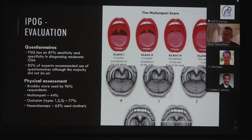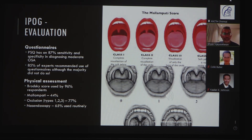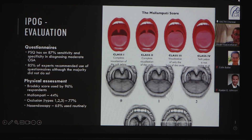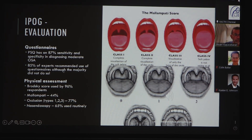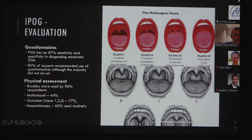We've talked about poor access to sleep studies and using sleep questionnaires pre- and post-operatively. The International Pediatric Otolaryngology Group found 87 percent sensitivity for diagnosing OSA with the PSQ, and 85 percent of experts recommended doing preoperative PSQs, although the majority did not do so. For physical assessment, the Brodsky score is most commonly used — 96 percent of pediatric ENT surgeons use it. The Mallampati score was used by only about 50 percent, occlusion types by nearly 80 percent, and 65 percent use endoscopy routinely.